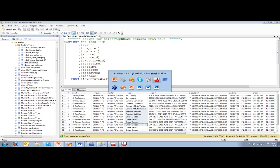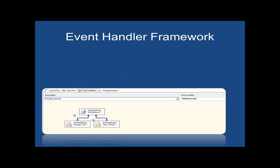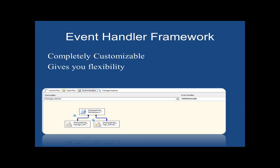The other option I generally use — let me open up my PowerPoint — is to create my own logging with event handlers, which gives you a lot of flexibility. The reason I like using a custom event handler framework is it gives you complete customizability: you can add a Send Mail task, do email, log to a table — you are the architect. The tradeoff is it becomes a little more difficult to deploy. As you create 50 new packages, you have to copy that framework code into all 50 packages, and if you want to modify the framework across 100 packages, you have to touch all of them.